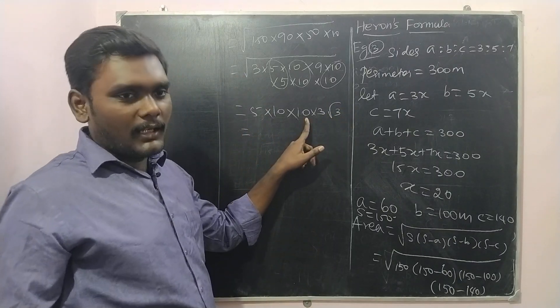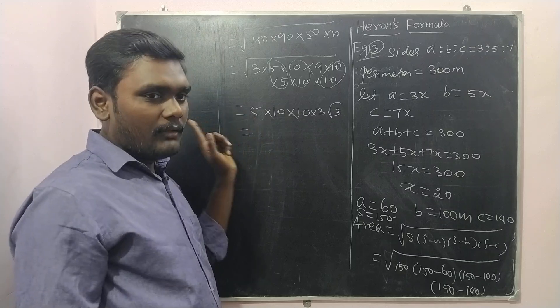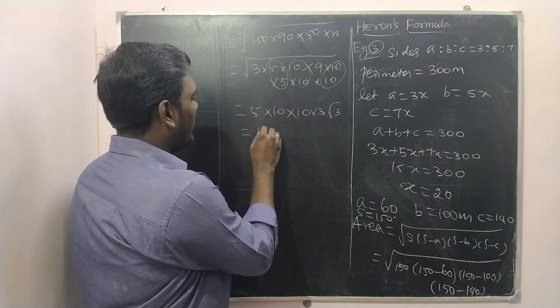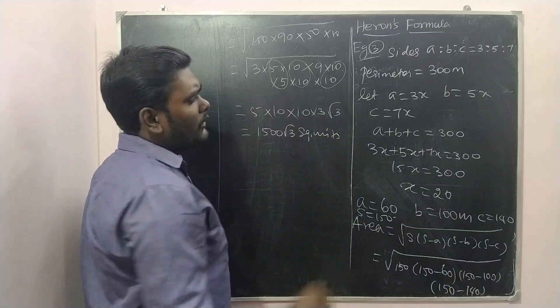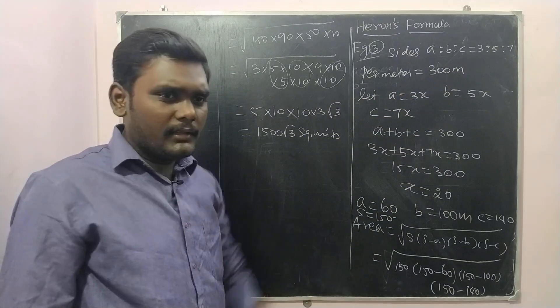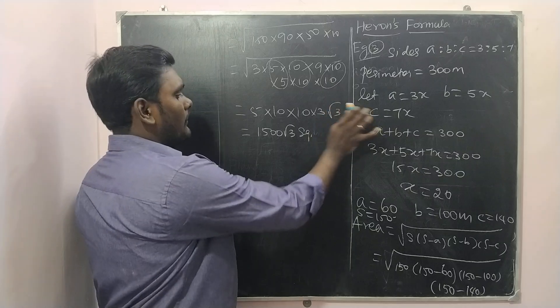So we have 10 times 10 are 100, 100 into 5 is 500, 500 into 3 is 1500 root 3 square units. No, not square units. They are given 300 meter, right? Yes, meters square.